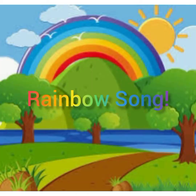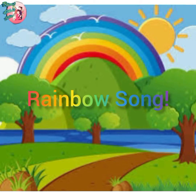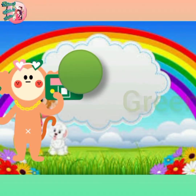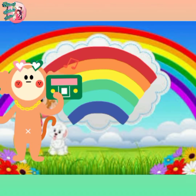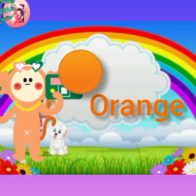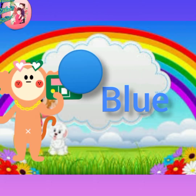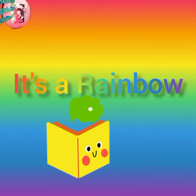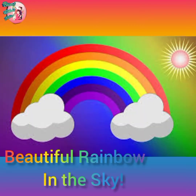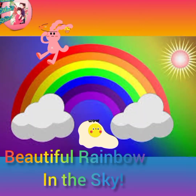Now we are going to sing the rainbow song. Red and orange, yellow, green. Blue, indigo, violet. Red and orange, yellow, green. Blue, indigo, violet. It's a rainbow. It's a rainbow. Beautiful rainbow in the sky.